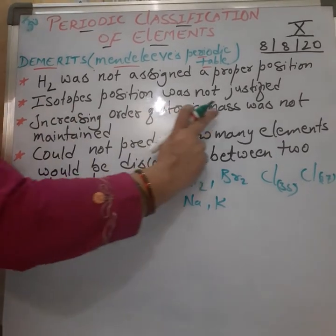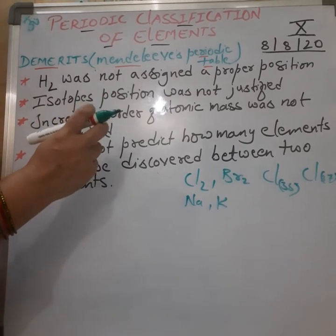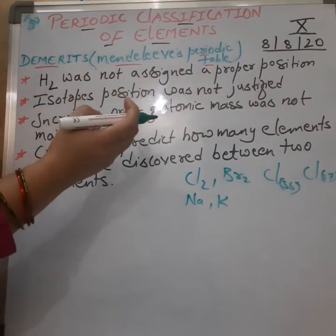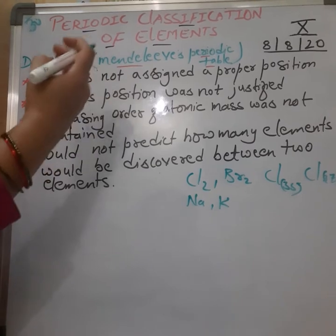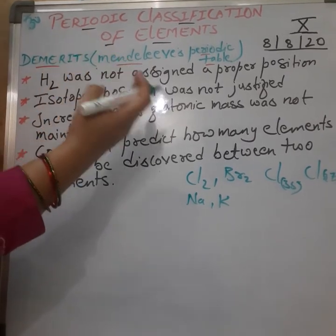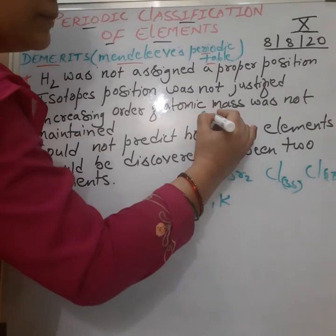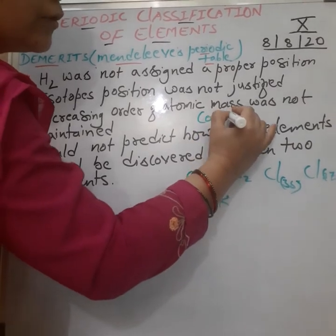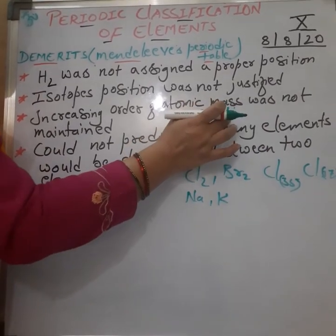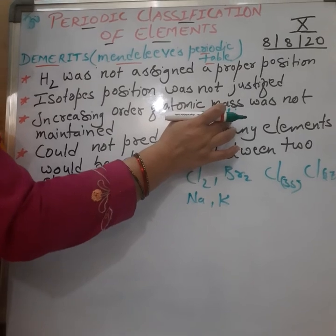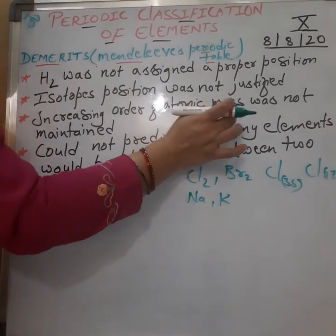Another drawback was that the increasing order of atomic mass was not maintained — meaning an element with more atomic mass was placed before an element with lesser atomic mass. For example, the placement of cobalt and nickel: cobalt had more atomic mass compared to nickel, but was still placed before nickel.